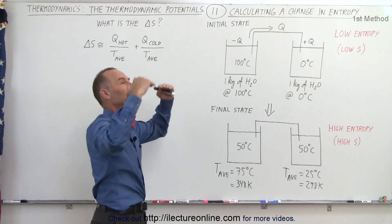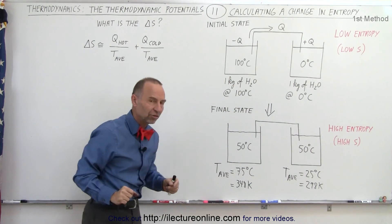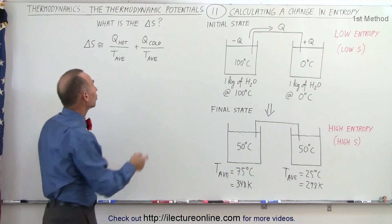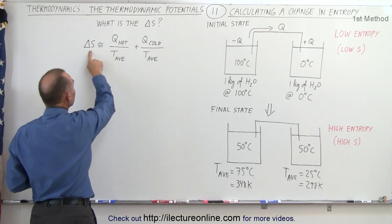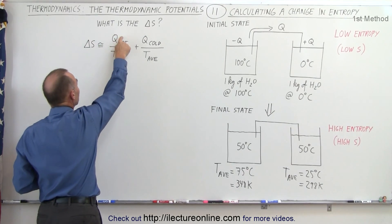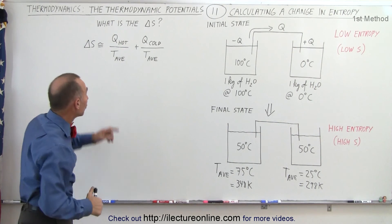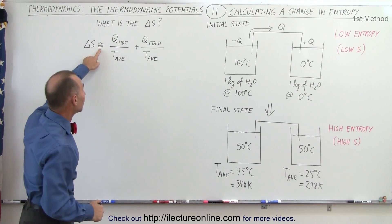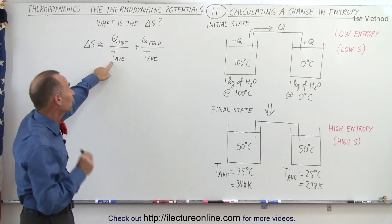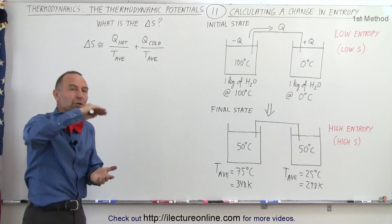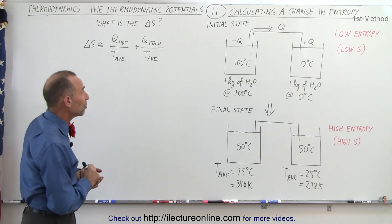When heat stops flowing, entropy has reached its maximum value in this system. By definition, the change in entropy is the heat exchange divided by the temperature at which it happens. We use an approximation symbol because we're not really supposed to use the average temperature — we're supposed to integrate over the change in temperature, and we'll show how to do that in the next video.